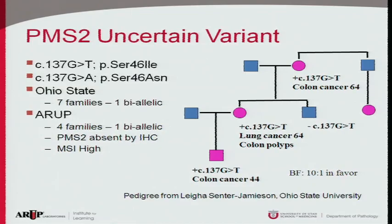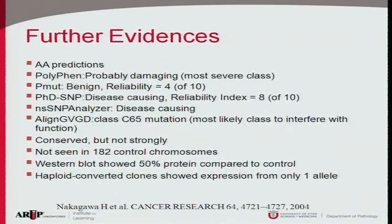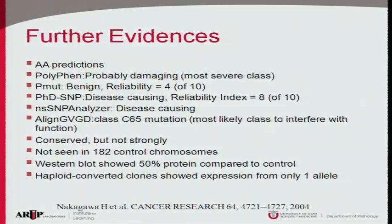Using the best family available, we had a 10-to-1 Bayesian likelihood factor that this is pathogenic — which alone would not be sufficient. PolyPhen called it probably damaging; PMut called it benign with low reliability; other algorithms leaned toward disease-causing. The variant was absent in 182 control chromosomes, which is somewhat helpful for rare mutations. Western blot showed 50% protein compared to control, and haploid converted clones showed expression from only one allele — starting to build stronger evidence for pathogenicity.